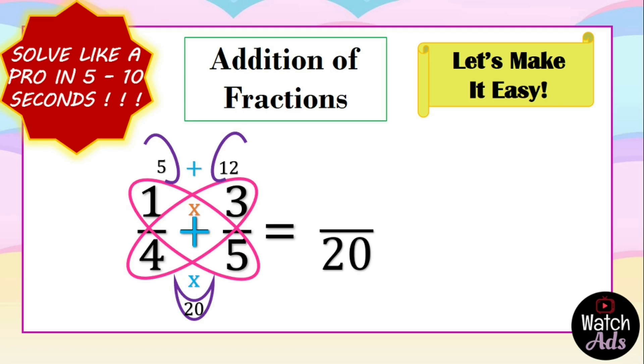We check if it is in the lowest term and yes it is in the lowest term, therefore it is our final answer. If you have noticed, we have drawn something like a butterfly and it's called the butterfly method.